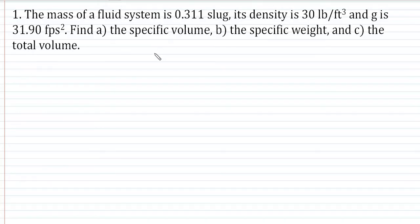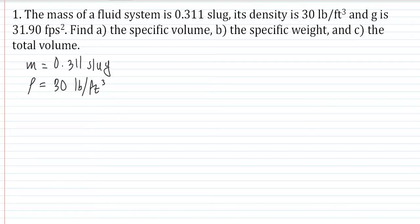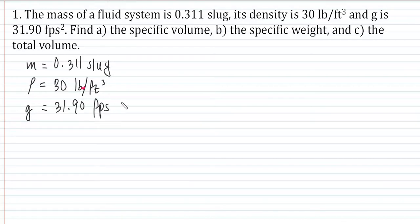We have the mass of a fluid system equal to 0.311 slug and its density is 30 pounds per cubic foot. G is equal to 31.90 feet per second squared. Let's write those givens: mass is equal to 0.311 slug, density is equal to 30 pound mass per cubic foot — note that the pound here is automatically pound mass — and g is equal to 31.90 feet per second squared.